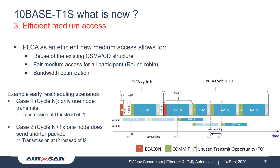PLCA also allows optimization of bandwidth use. As an example, I brought up two simplified cases in a multidrop topology with three nodes. The cycles are initialized by the beacon in red. If only one node needs to transmit and the others remain silent, this node is able to reschedule its transmission at an earlier time. When a node sends a shorter message, the next node in line is also able to transmit at an earlier moment. This means transmit opportunities are dynamic, and in comparison to classical time-division access, less bandwidth is wasted.